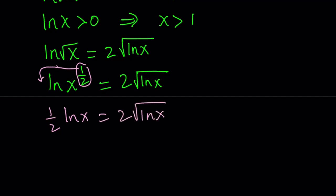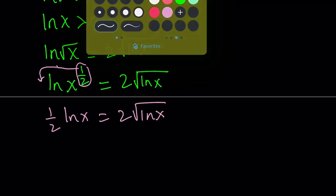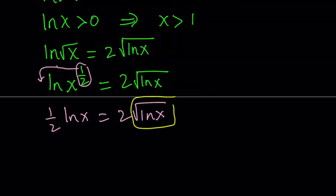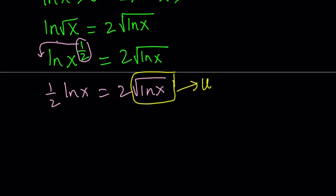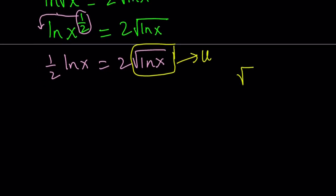Now at this point, it makes sense if we use substitution, right? Let's go ahead and call this something. How about u? Then we get the following. If square root of ln x is equal to u, then ln x is equal to u squared.